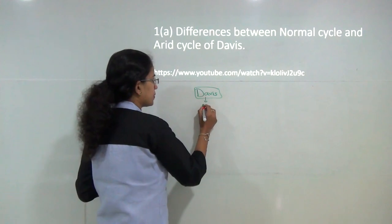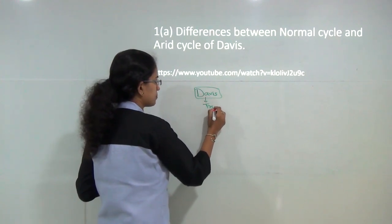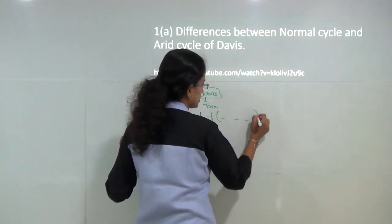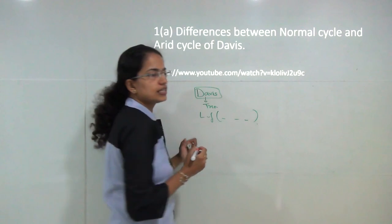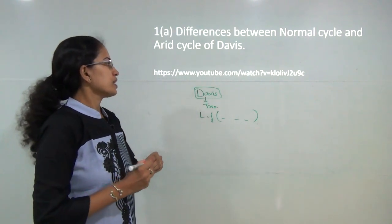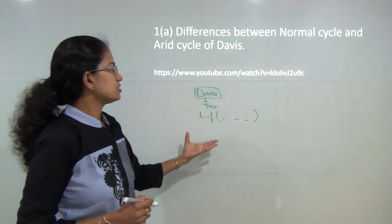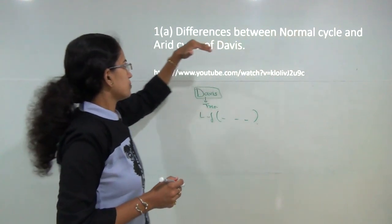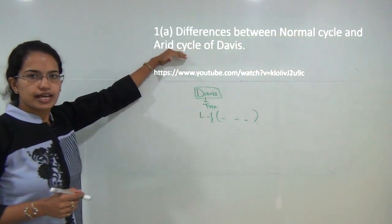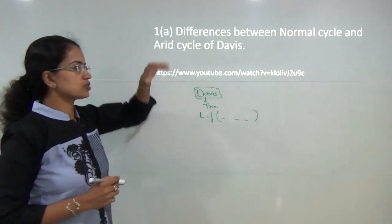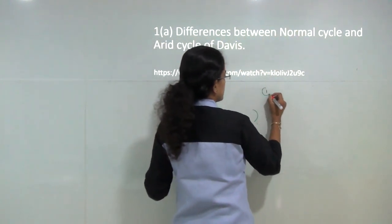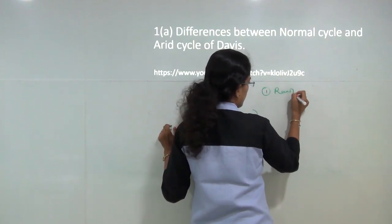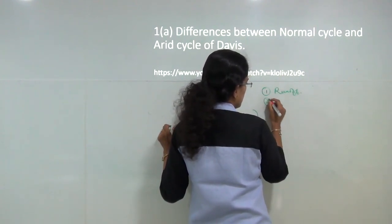Davis talked about a landscape trial where landscape is a function of three elements: structure, process, and stage. Then you must explain the differences between the normal cycle and the arid cycle of erosion. You must start with the differences in the manner of runoff.